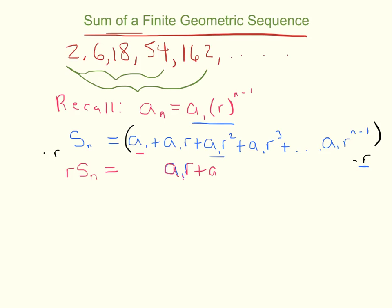If I multiply r times a₁r, it's going to bump up the exponent to a₁r squared. If I multiply it by the next one, it's going to bump it up to a₁ times r cubed. So the point is, I'm getting everything back again, just a little bit shifted.